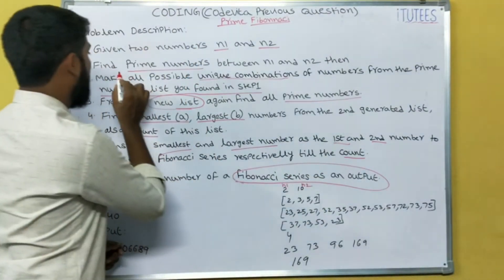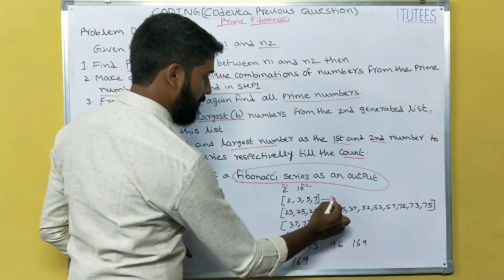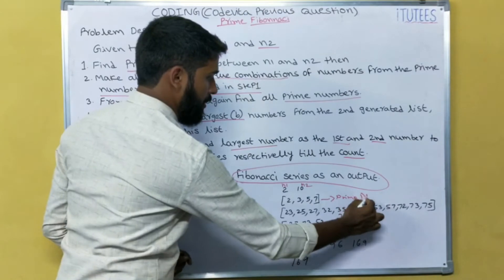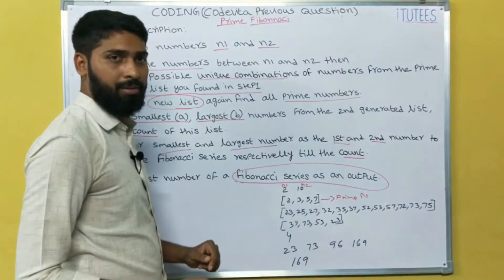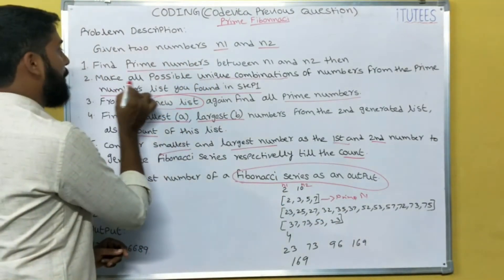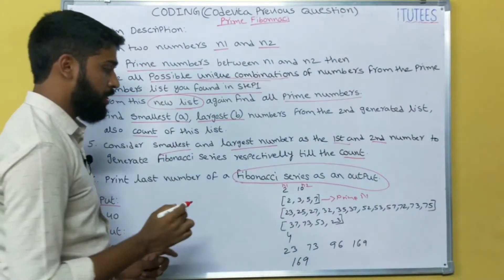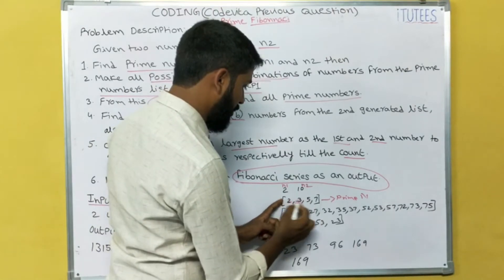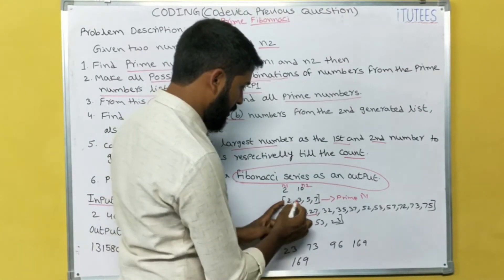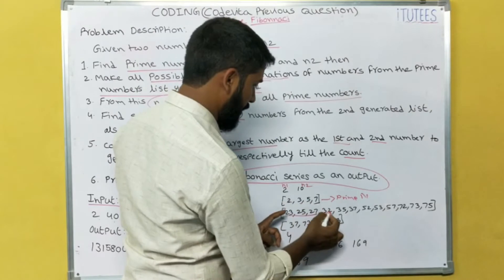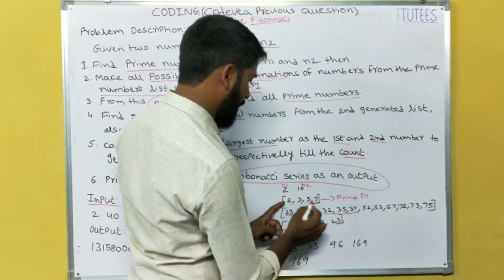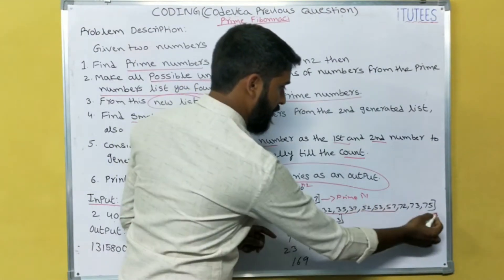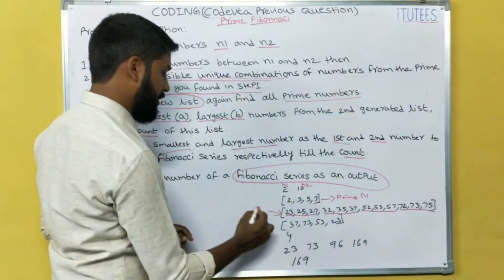So what is the first step? Find prime numbers. These are the prime numbers between 2 and 10. Next, what is the second step? Make all possible unique combinations. So the unique combinations are: 23, 25, 27, 32, 35, 37, 52, 53, 57, 72, 73, 75. So this is the second step — the combinations.